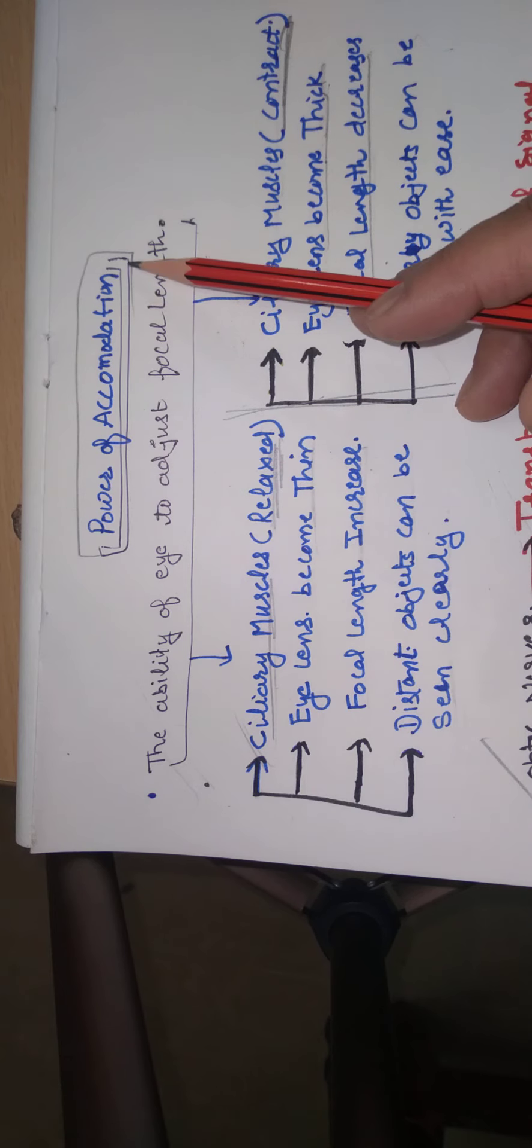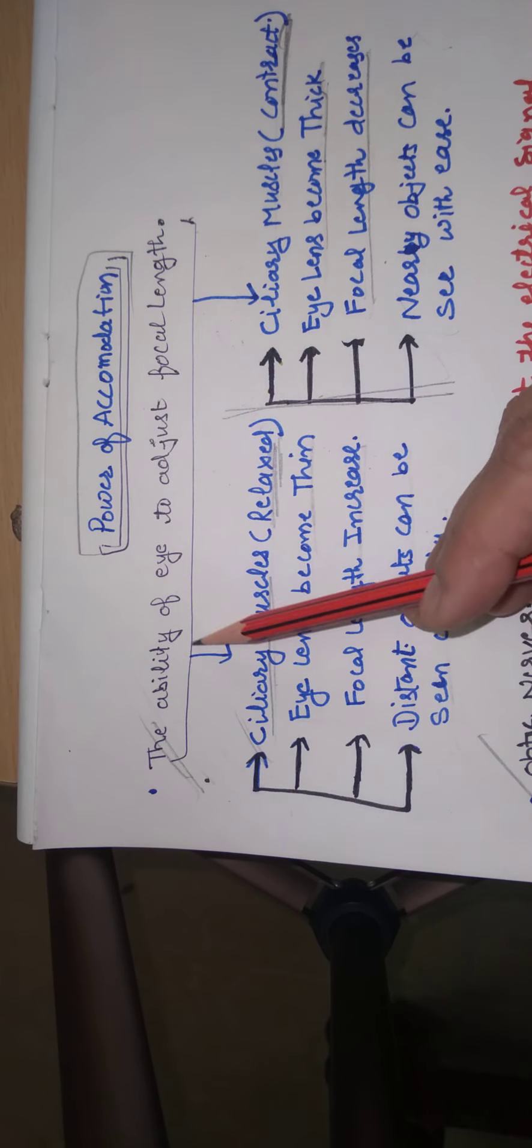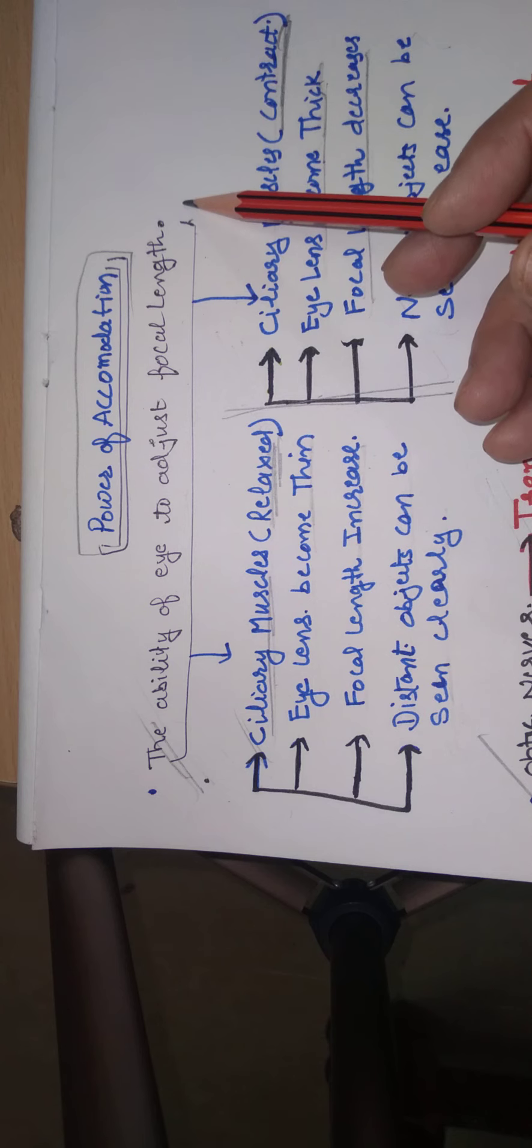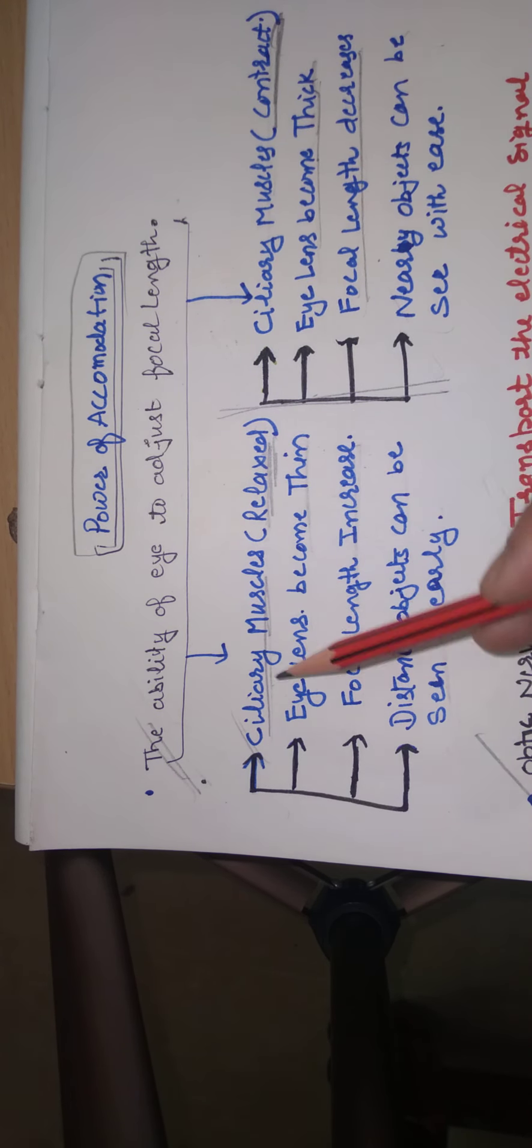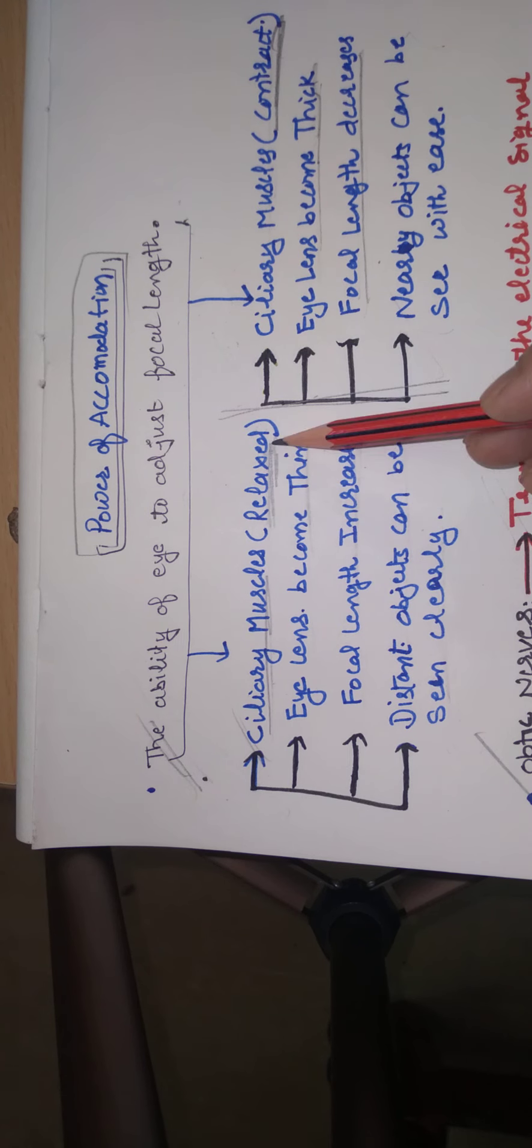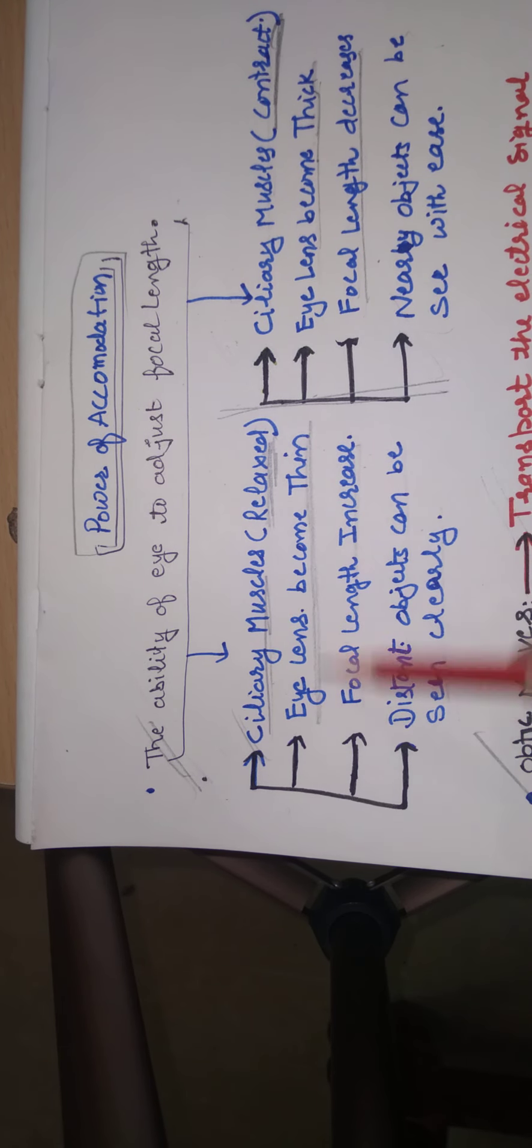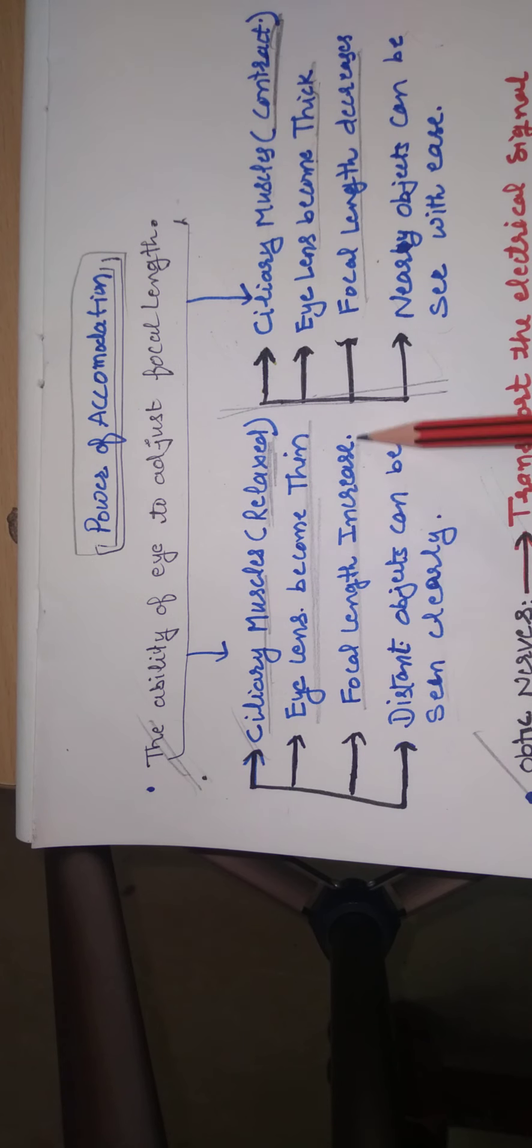Power of accommodation. Definition is: the ability of eye to adjust the focal length. We have discussed this. Ciliary muscles relaxed, the eye lens thin, focal length increase.